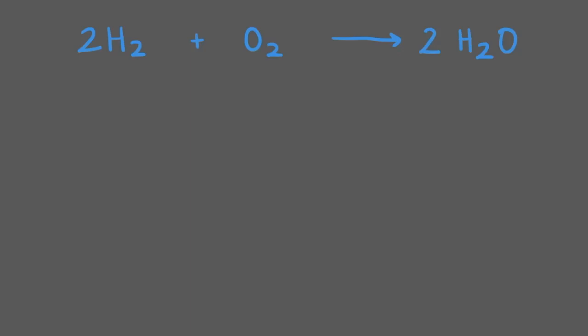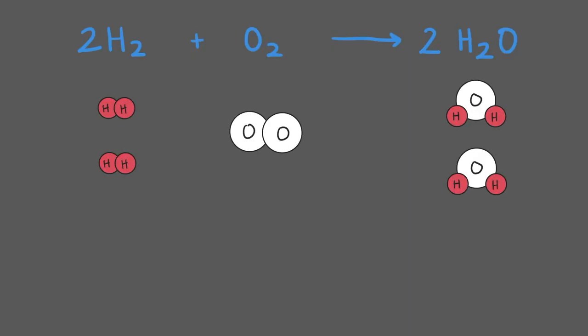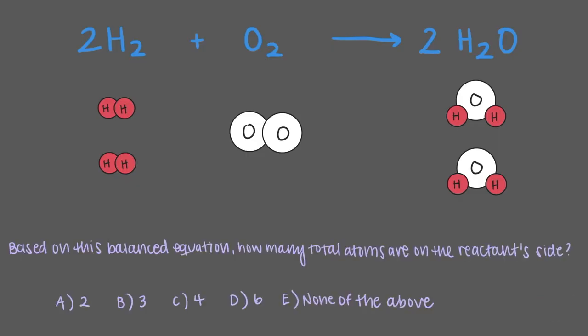The correctly balanced equation for hydrogen and oxygen molecules to make water is shown here. Two molecules of hydrogen react with one molecule of oxygen to produce two molecules of water. There are six atoms on the reactant side: two of these atoms are oxygen atoms, which come from our one oxygen molecule, and the other four atoms are hydrogen atoms, which come from our two molecules of H2. Notice there are exactly the same number of atoms on the product side as well — two oxygen atoms and four hydrogen atoms. This chemical equation is balanced.